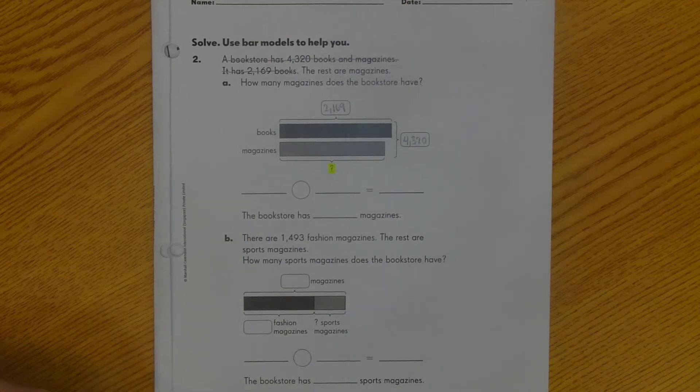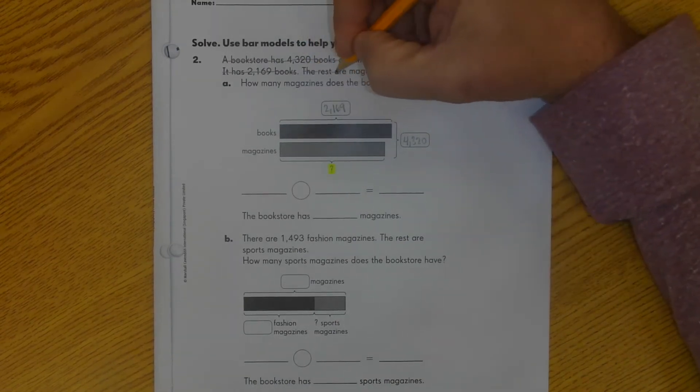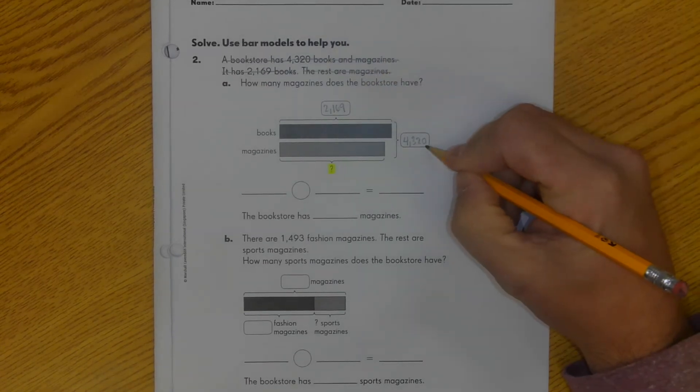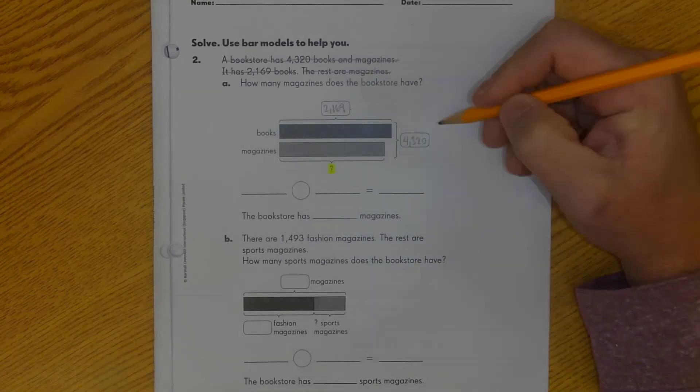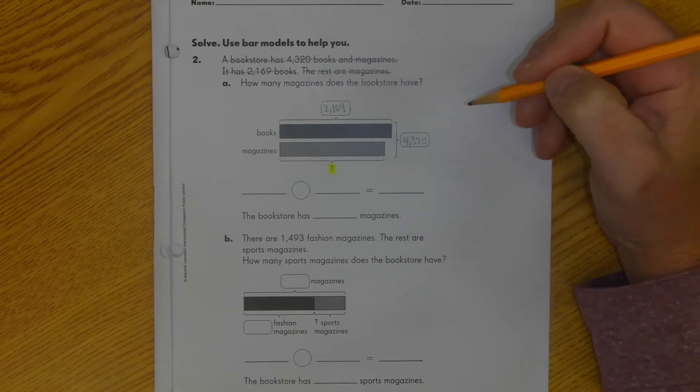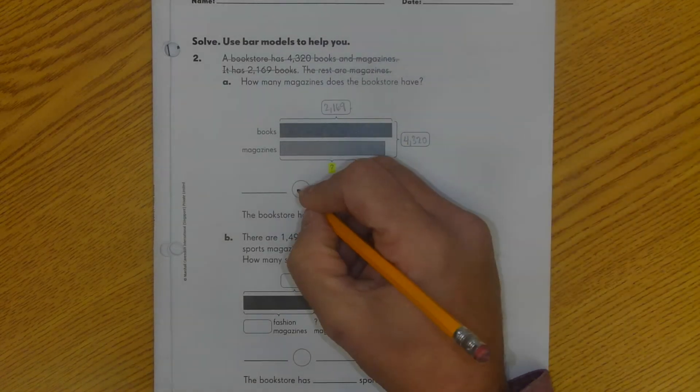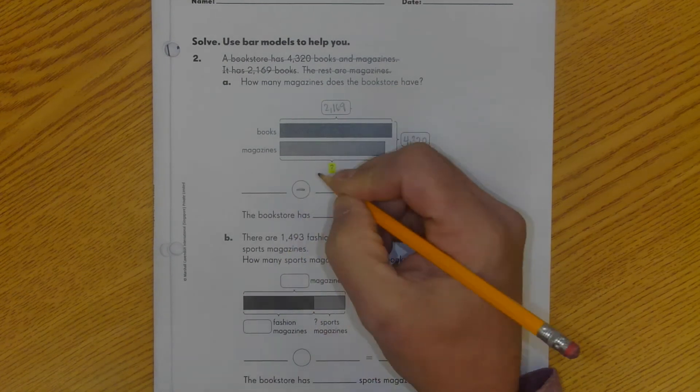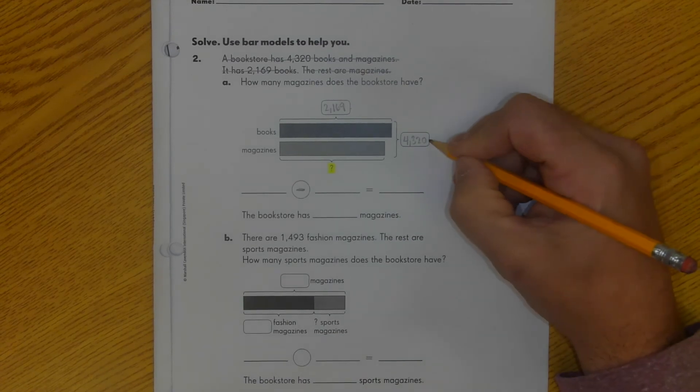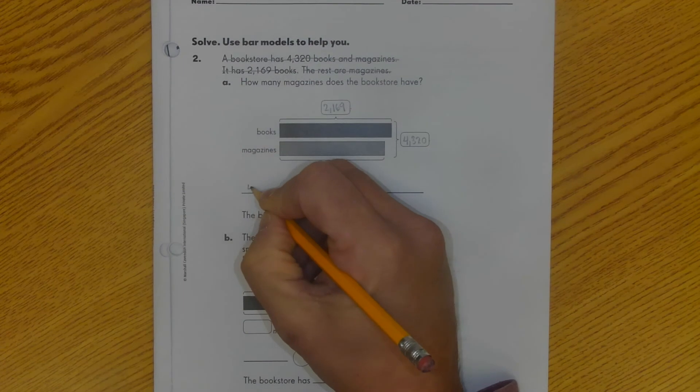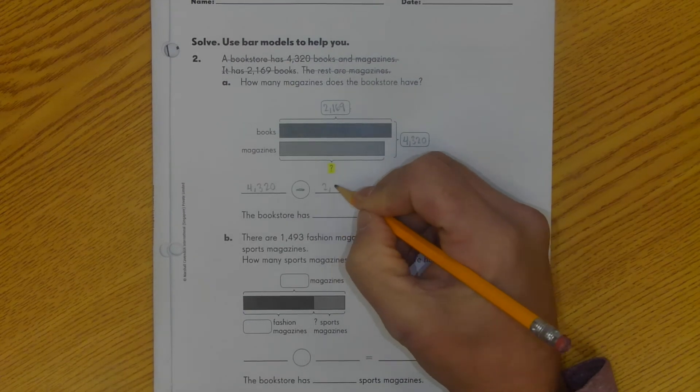Now I've got to start figuring out what to do. So my question is, how many magazines does the bookstore have? Well, I know the total between books and magazines is here. And I know the number of books they have is here. So I know I'm going to have to use subtraction because I'm going to have to take away how many books they have to figure out how many magazines they have. So I'm going to put my subtraction symbol in there. Then it comes down to which number goes where? If you remember in subtraction, we always start with a larger number first. So I know this 4,320 is going to go here. And then my smaller number, 2,169, is going to go up here.